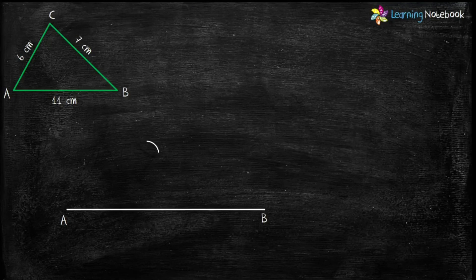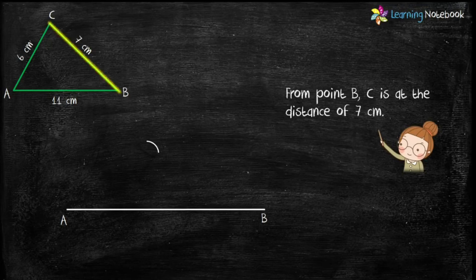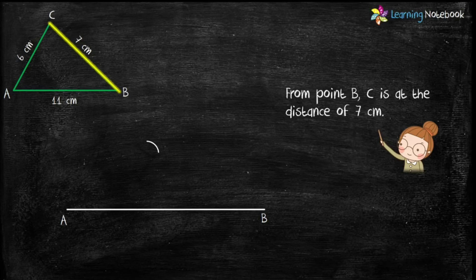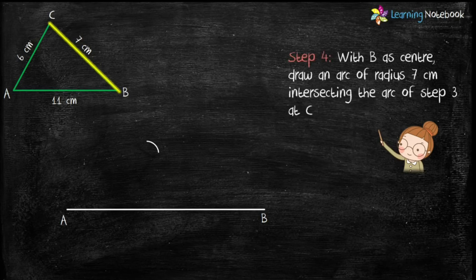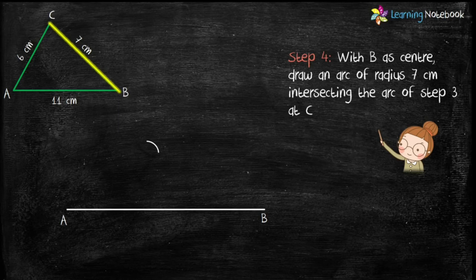Now, again look at the rough sketch. From point B, C is at the distance of 7 cm. Therefore, step 4 is, with B as center, draw an arc of radius 7 cm which intersect the arc of step 3 at point C.